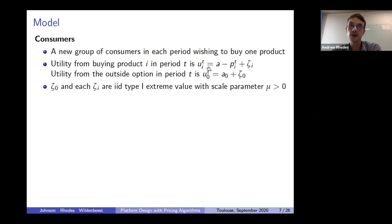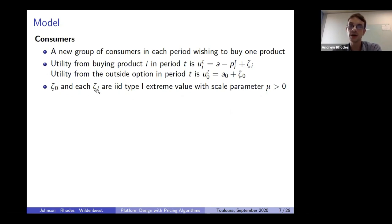Throughout the talk, we focus on the logit model. We assume that zeta_0 and each zeta_i are IID draws from a Type 1 extreme value distribution with scale parameter mu. Therefore mu indexes the amount of product differentiation in this product category.